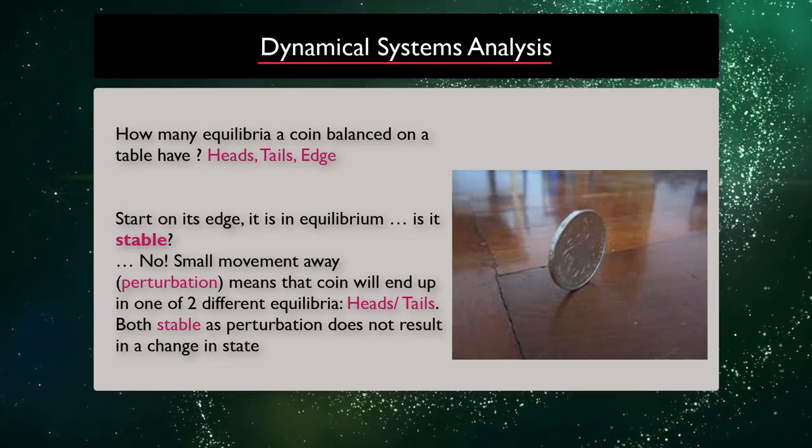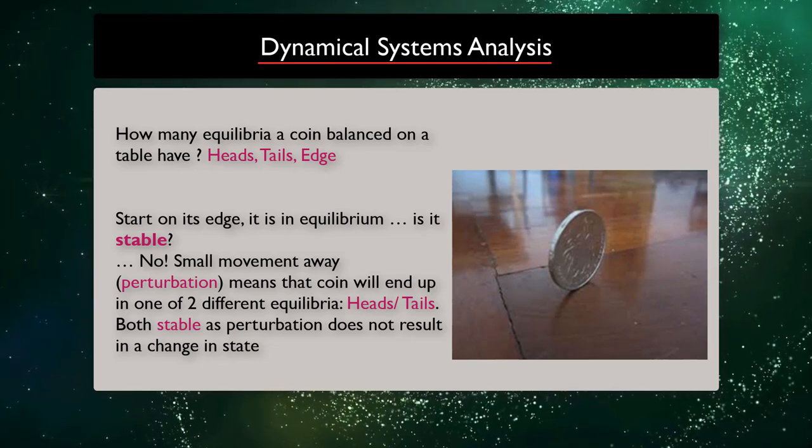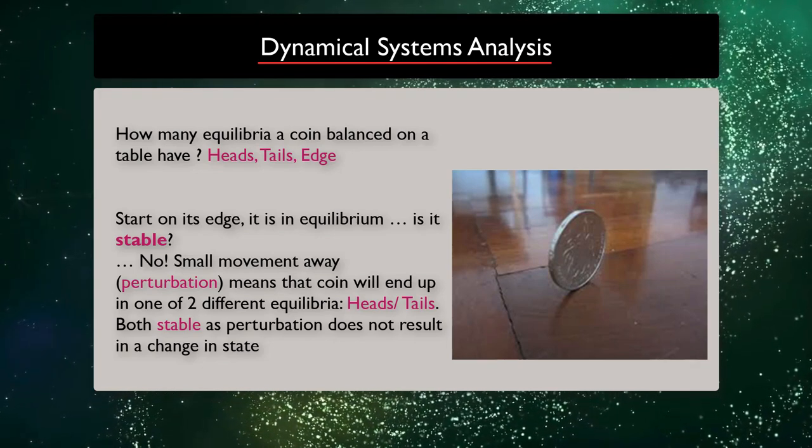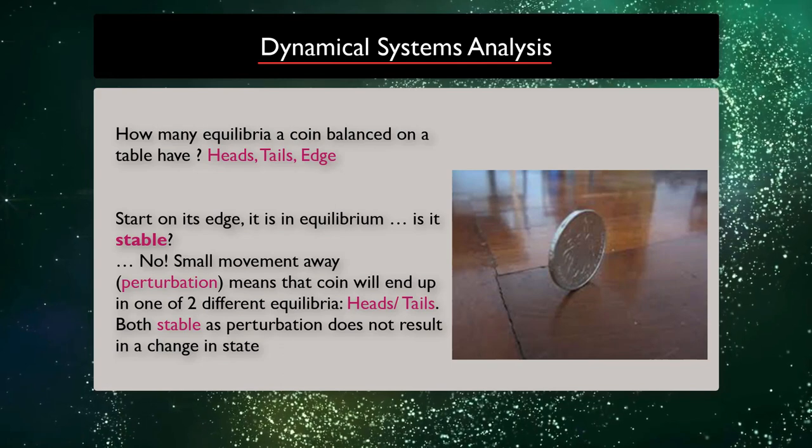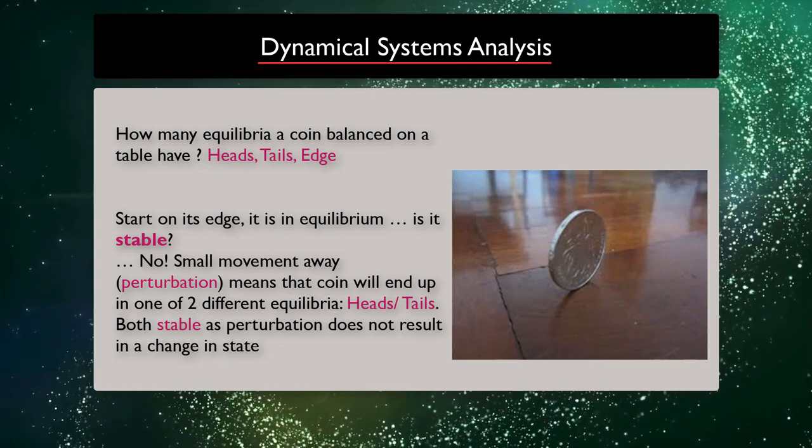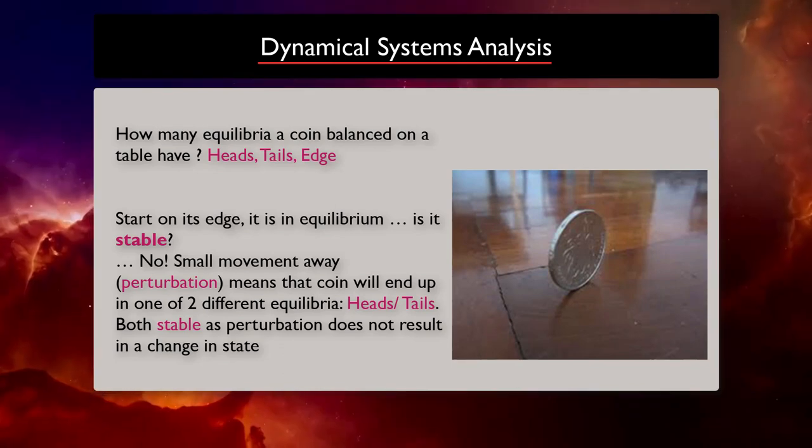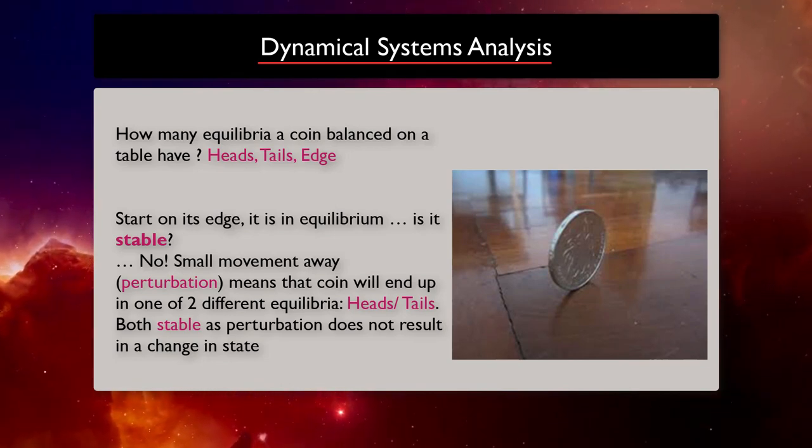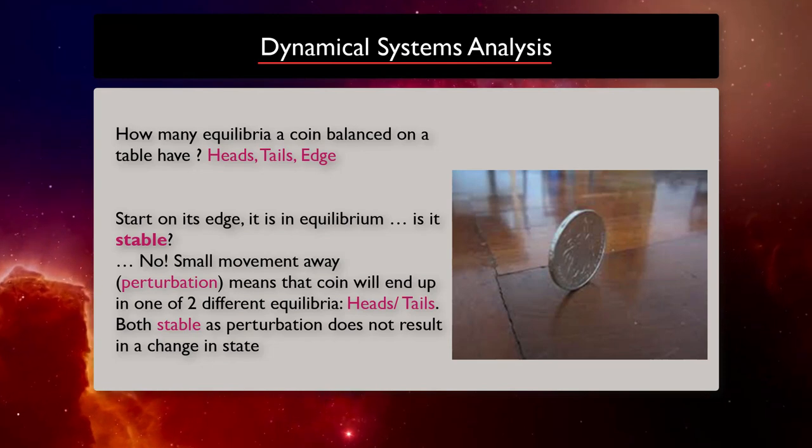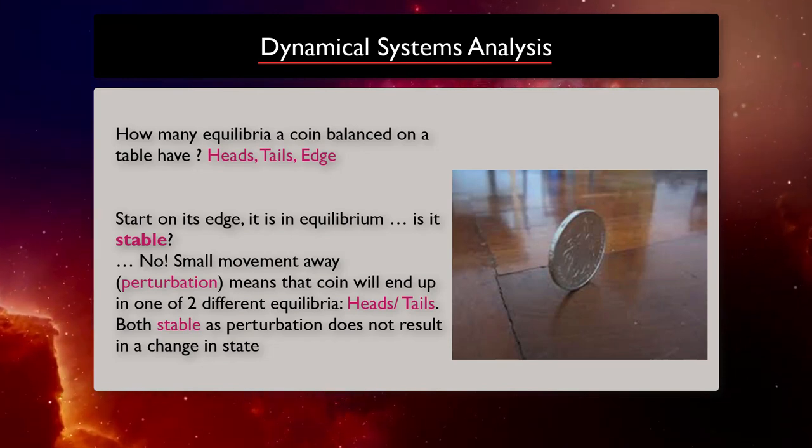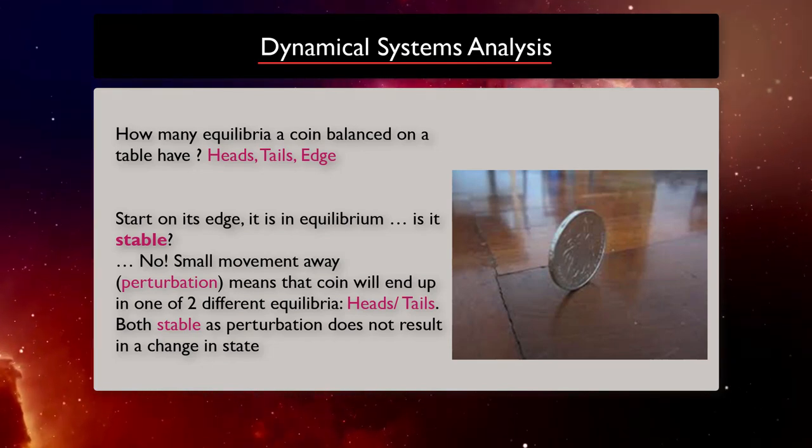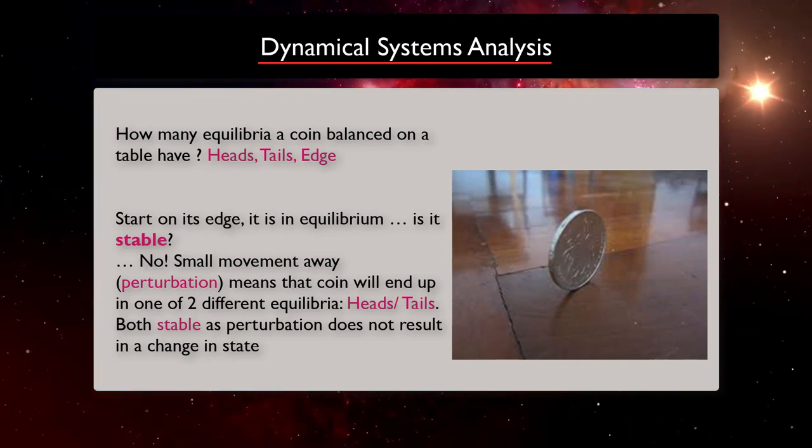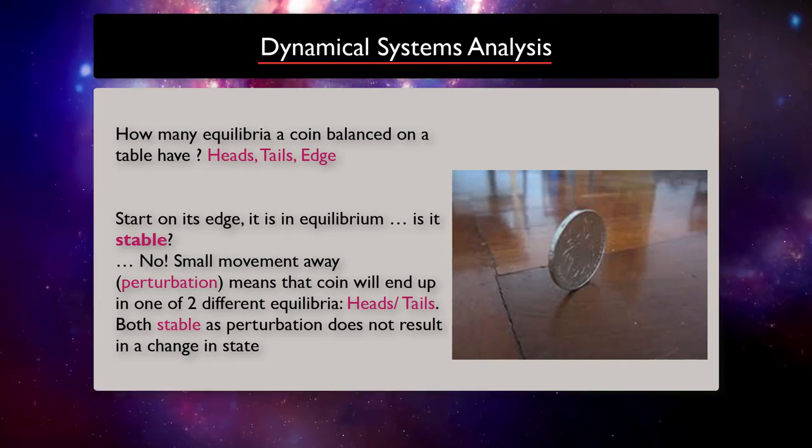So let's assume that you are one of the expert ones and could balance a coin at its edge. Is it stable? No, small push, perturbations, and the coin will end up in one of the two other states, heads and tails. How about those states? Are they stable? Yes, they are stable because if you perturb them, push them a bit, it does not change the result, so they stay in the same state.